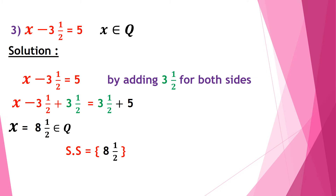Another example: x minus 3 and a half equals 5, where x belongs to the rational numbers. By adding 3 and a half to both sides as the additive inverse of negative 3 and a half, we get x minus 3 and a half plus 3 and a half equals 3 and a half plus 5. So x equals 8 and a half, which belongs to the rational numbers, and the solution set is {8 and a half}.